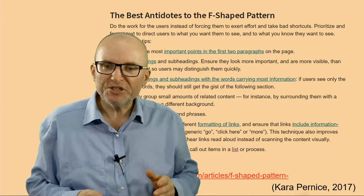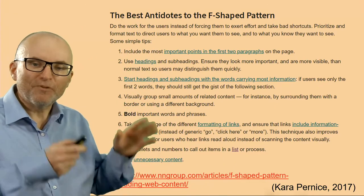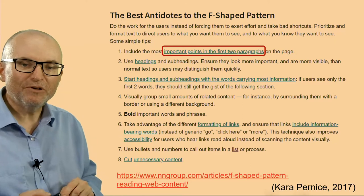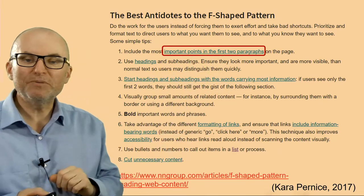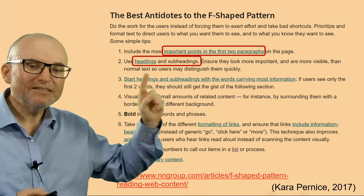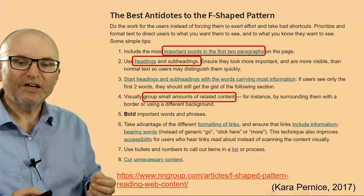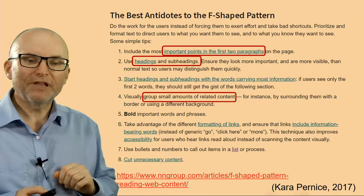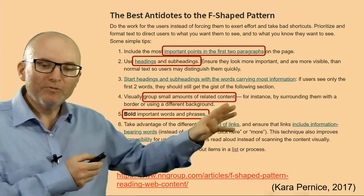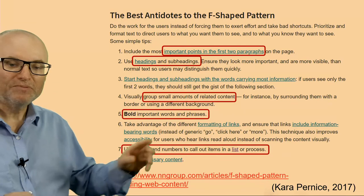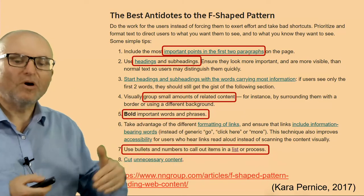They offer some suggestions, and as we go through them, we're going to find they're remarkably close matches for the five principles we talked about. They start with information structure: important points should be made in the first two paragraphs. We should make headings and subheadings, group small amounts of related content together — which is chunking. Bold important words and phrases, and use bullets and numbers to call out items in a list or process — again, this all goes to structure.